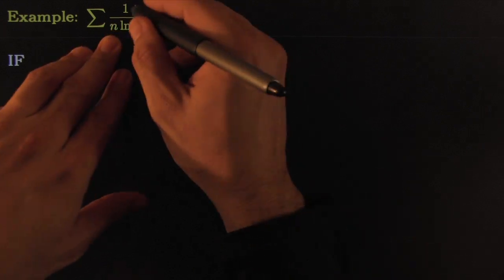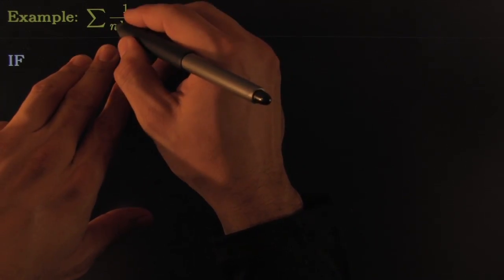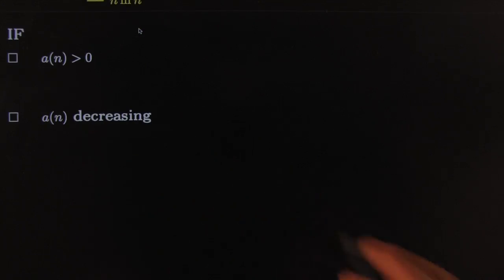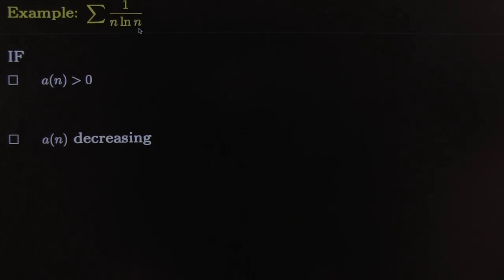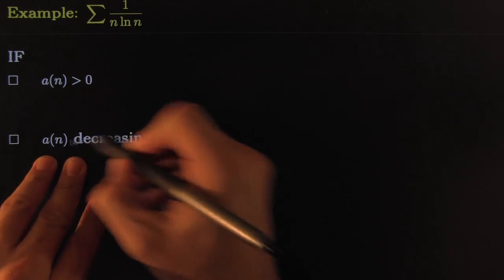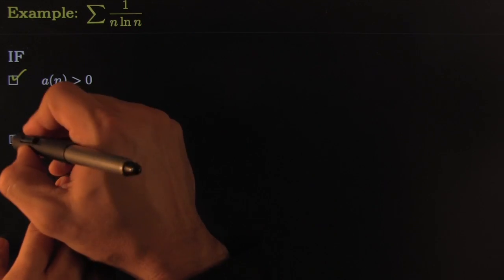Check out this one, the variation on this: you got 1 over N LN of N. We check our conditions here - we check that the terms are positive and that they're decreasing, and once we check those things we're ready.